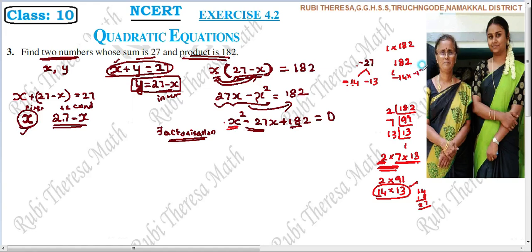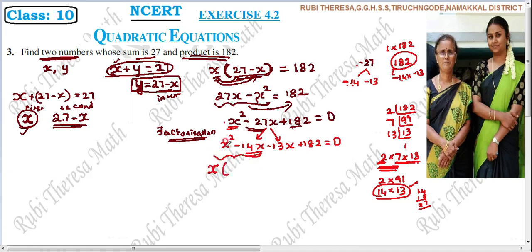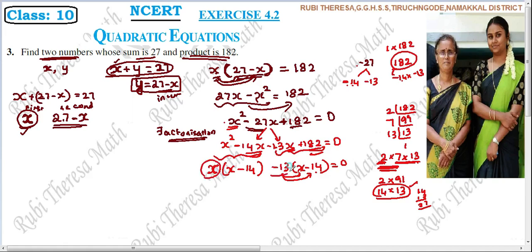So we split minus 27X into minus 14X minus 13X. The equation becomes X squared minus 14X minus 13X plus 182 equals 0. Taking X common from the first two terms: X(X minus 14). Taking minus 13 common from the last two terms: minus 13(X minus 14). So (X minus 14)(X minus 13) equals 0. Therefore X equals 14 or X equals 13.